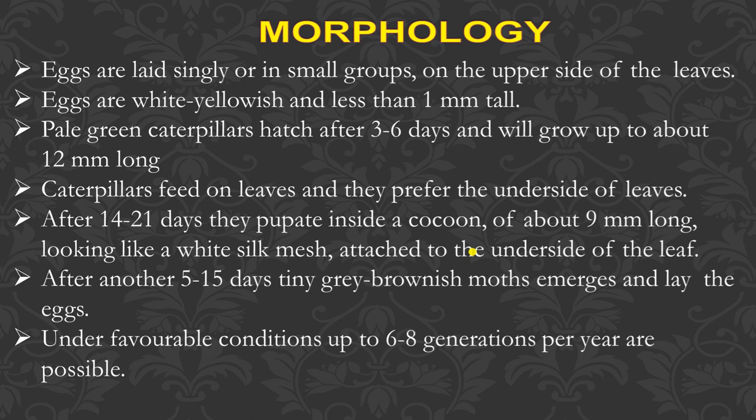Eggs hatch in 3 to 5 days. The larvae scrape and feed on the upper surface of the leaves, preferring the underside, and burrow inside the cabbage. After 14 to 21 days, they pupate inside a silken cocoon formed inside the cabbage. The cocoon size can be up to 9 mm long and looks like white silk mesh.